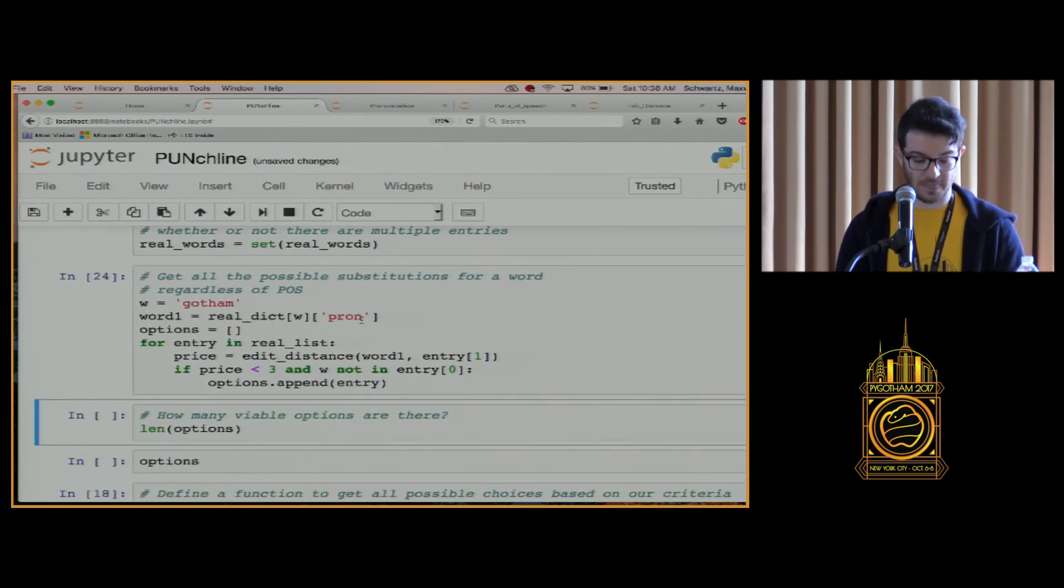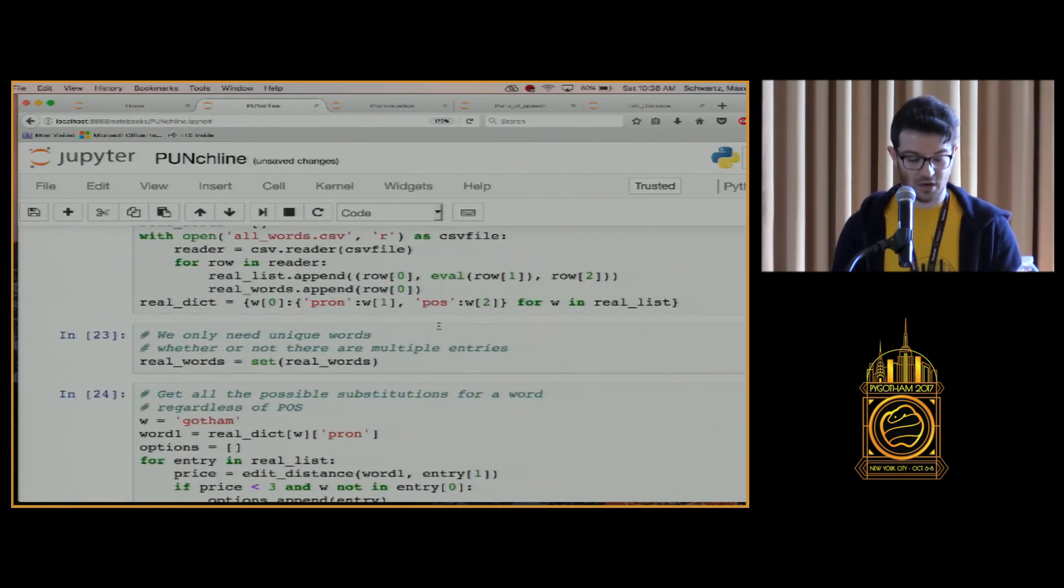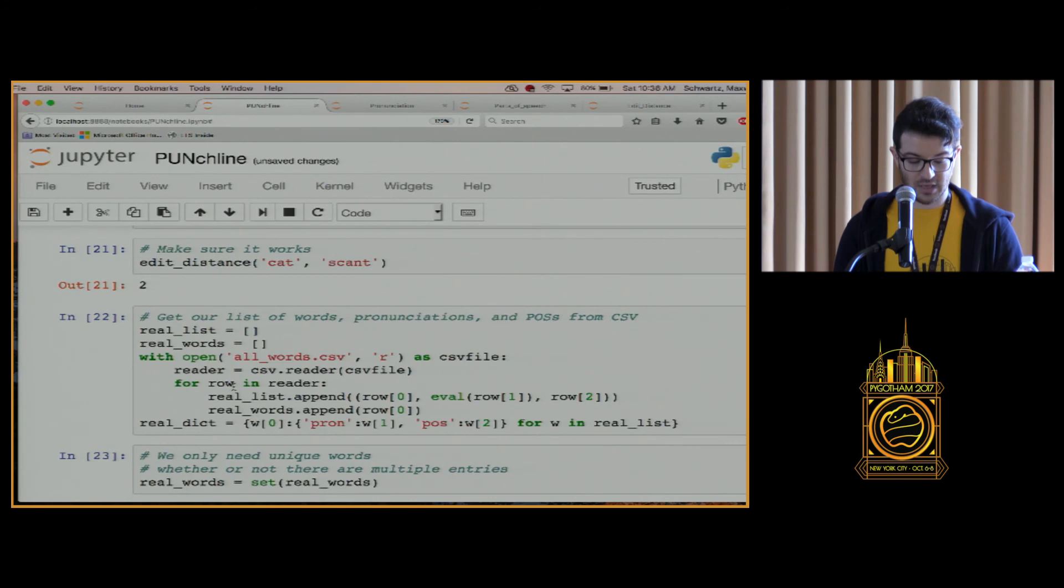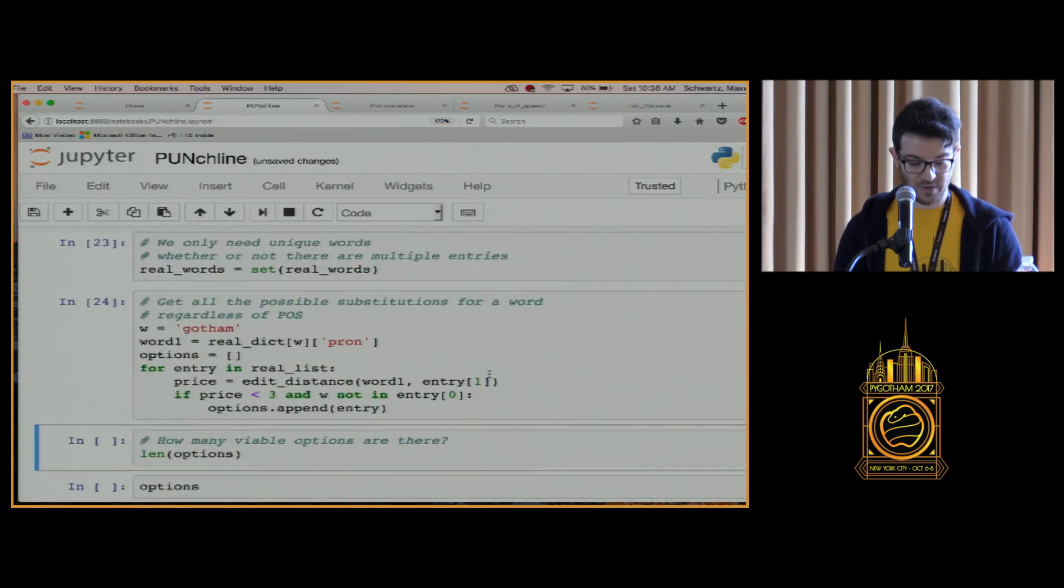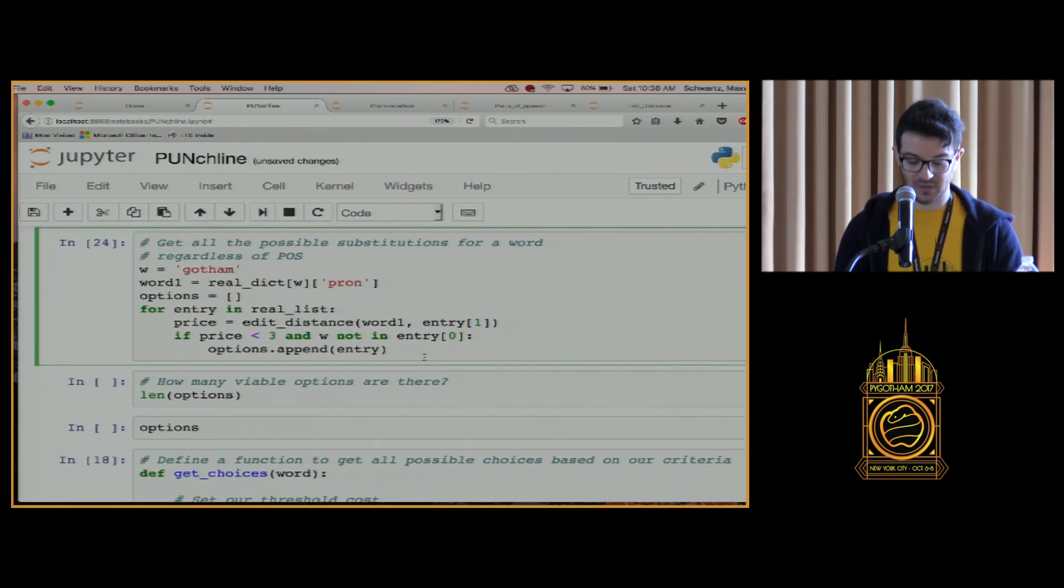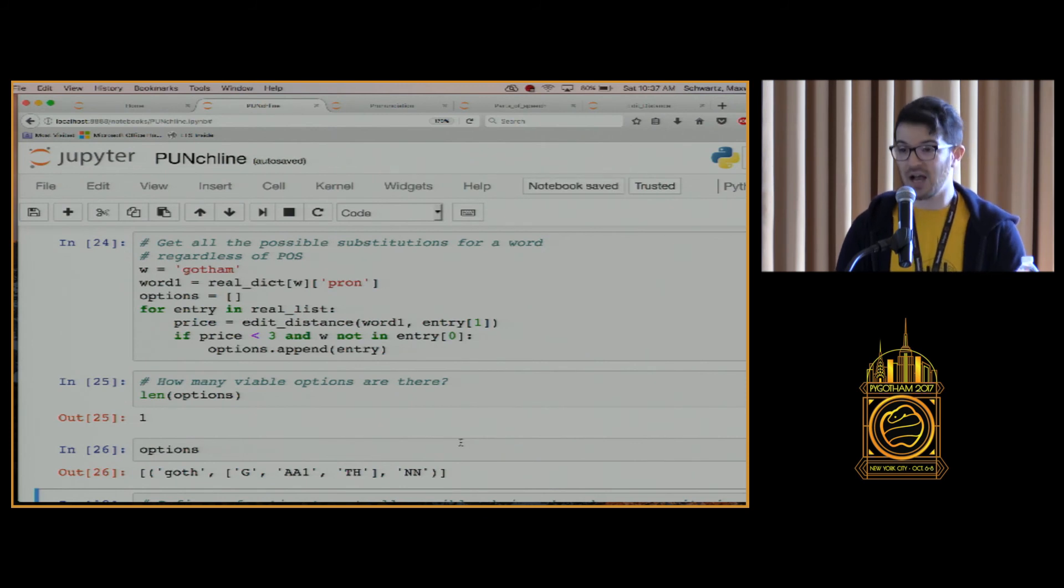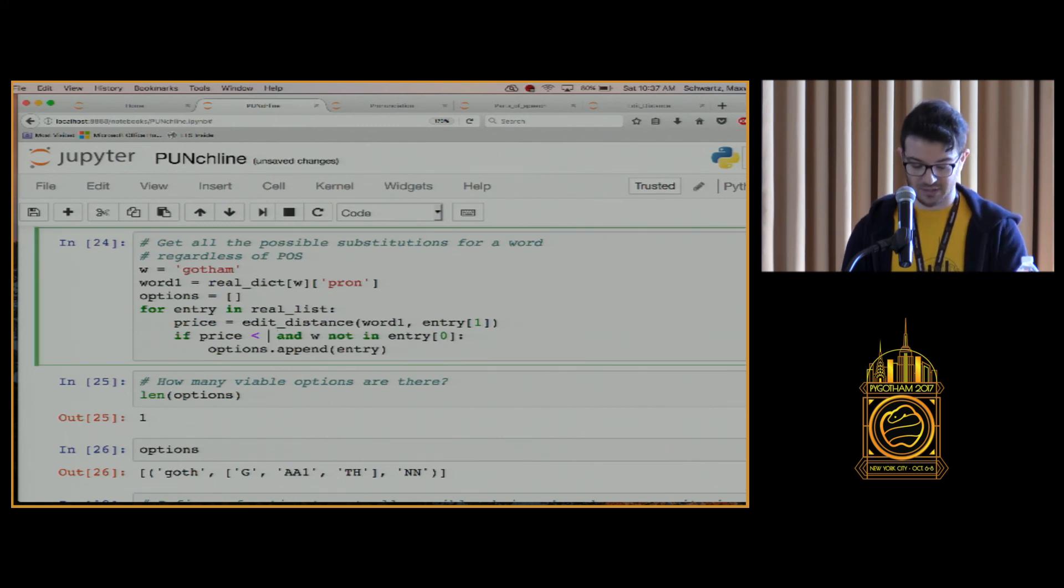It's just a faster way of dealing with it, and it also pre-tags all the words that are in it for their part of speech. We get all the unique words for it. And finally, we can define our function. So we can see for the word Gotham. How many possible options are there with a price of three, or a price of less than three? It finds only a single option, and that's because its option that it's finding is goth. Goth is pretty close phonetically to Gotham, right? It's just the um that it's adding on.